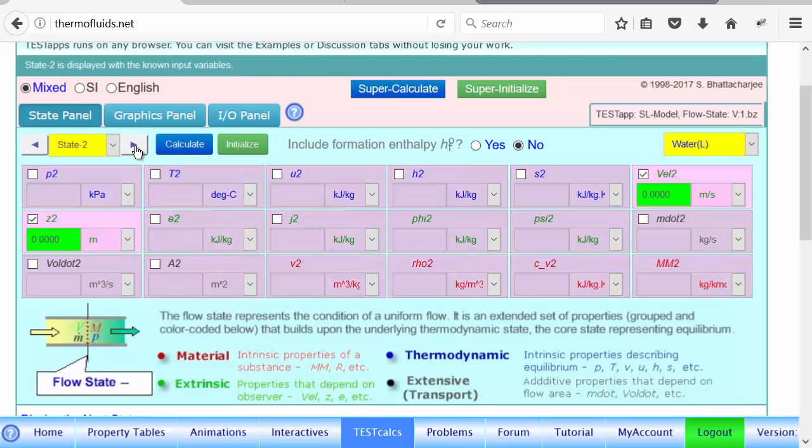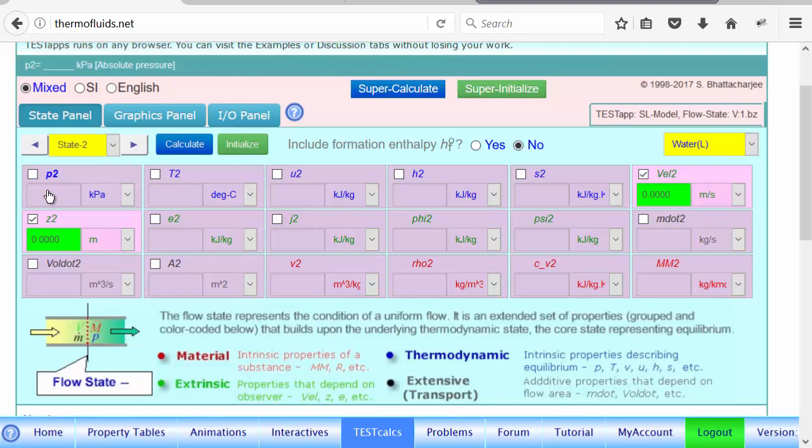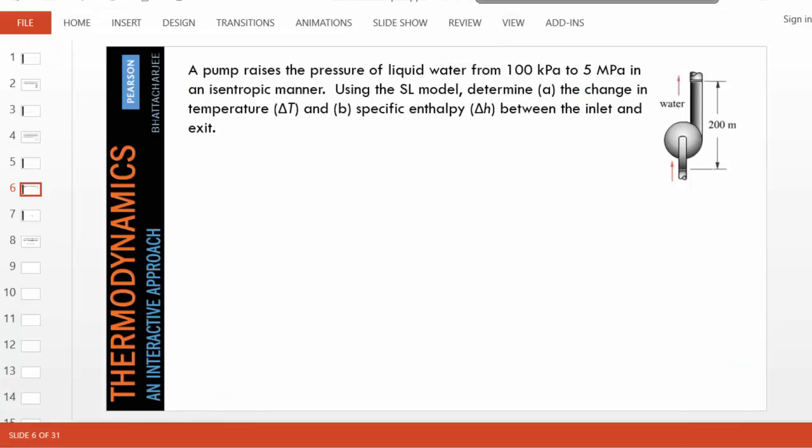So if we go to state 2, what is given in this problem? 200 meters is the elevation and 5 MPa is the pressure there. We select 5 MPa and entropy doesn't change, so we can use an equation equals S1. This relates S2 to the already calculated state 1. And the height is given, the elevation is given as 200 meters.